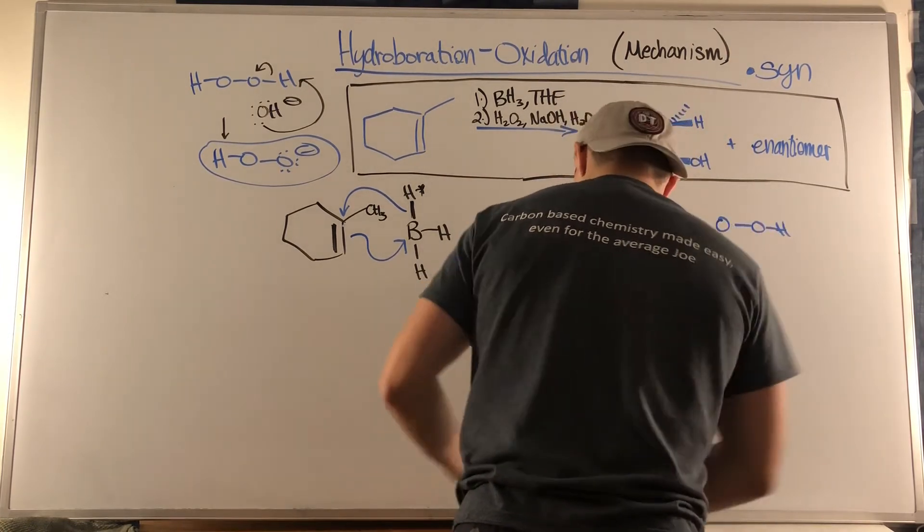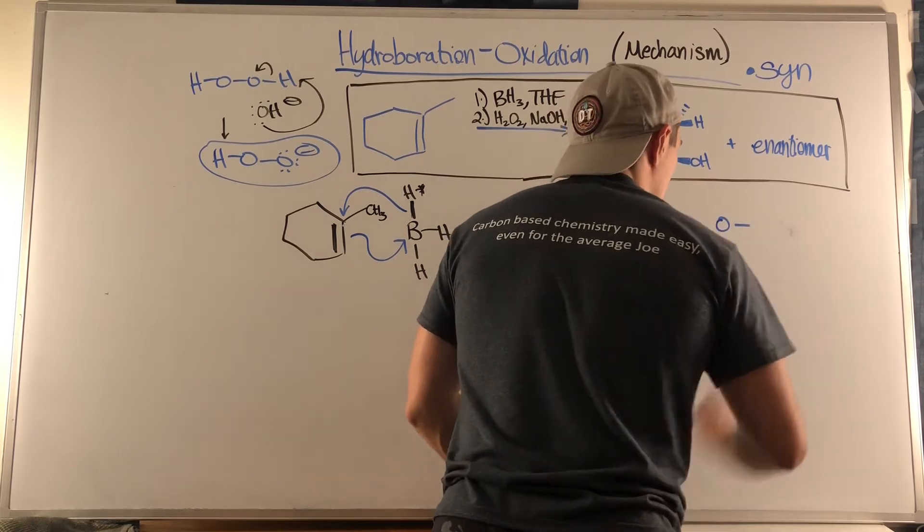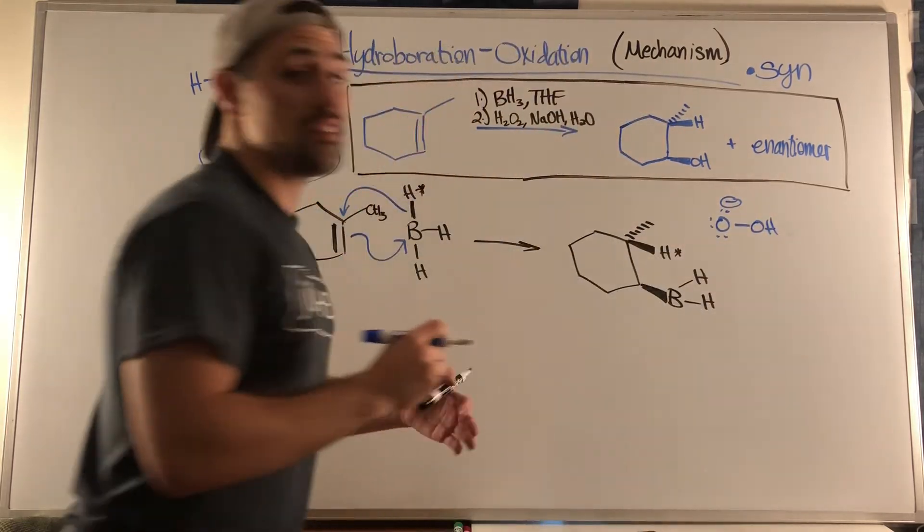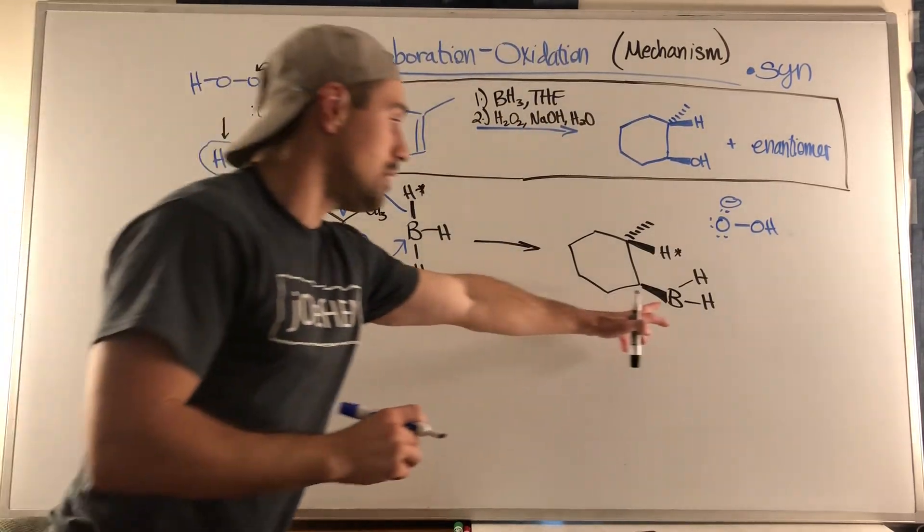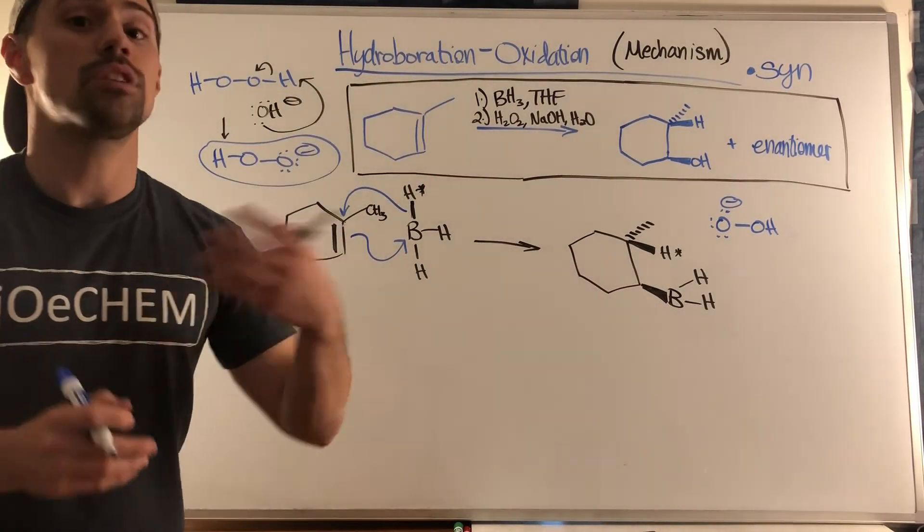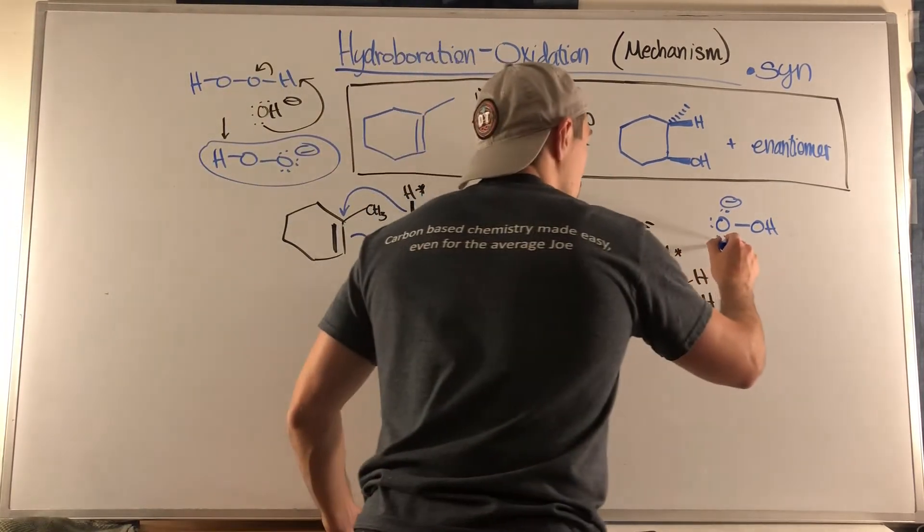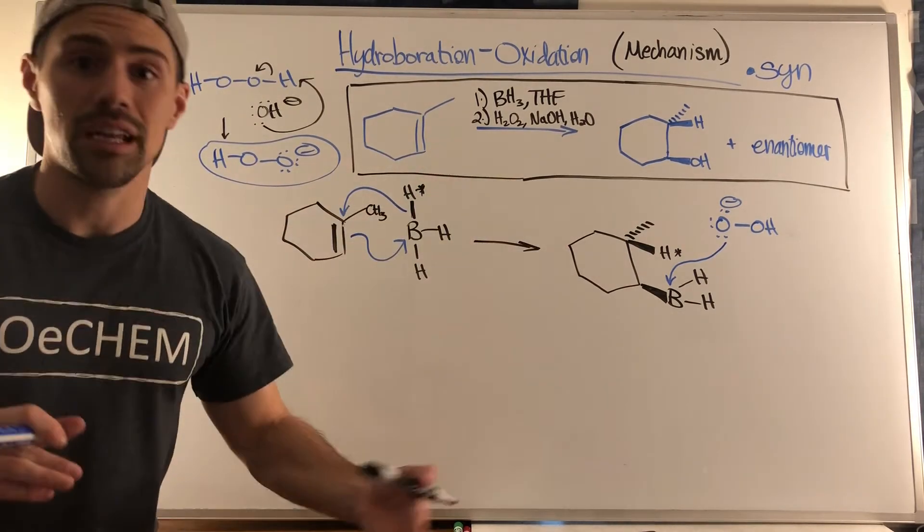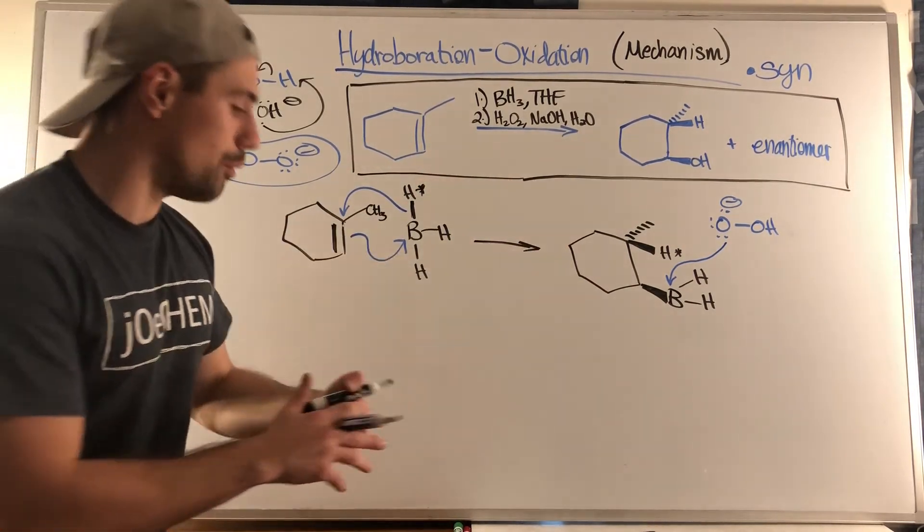I think you can see the negative oxygen is nucleophilic in nature. It is a hub of negative charge. If it's anything positive, it's going to go for it. Well, boron, yet again, has potential to accept electrons, accept the bond. So right here, we get an attack of the negative oxygen in the deprotonated hydrogen peroxide on that boron.